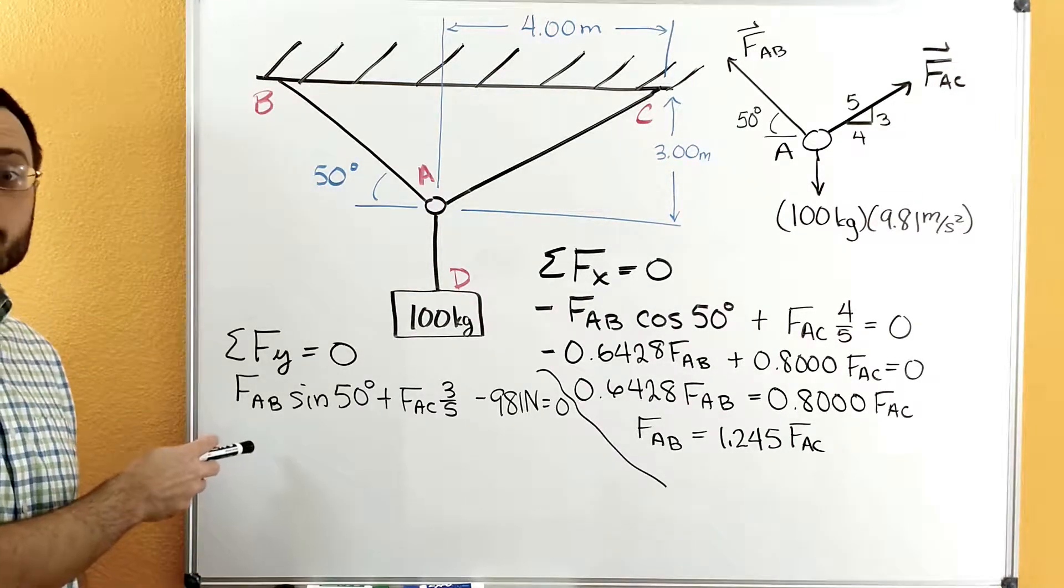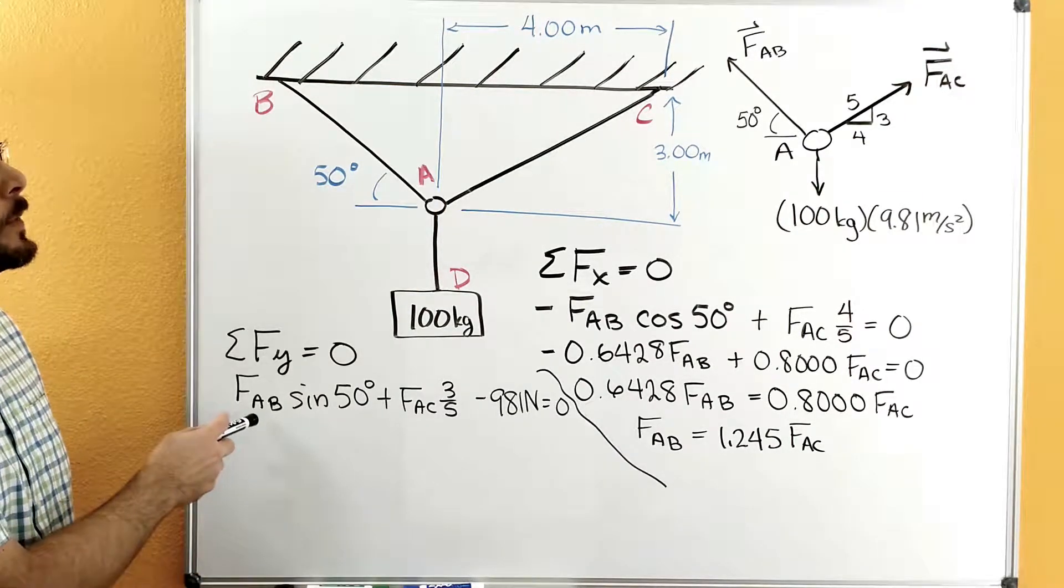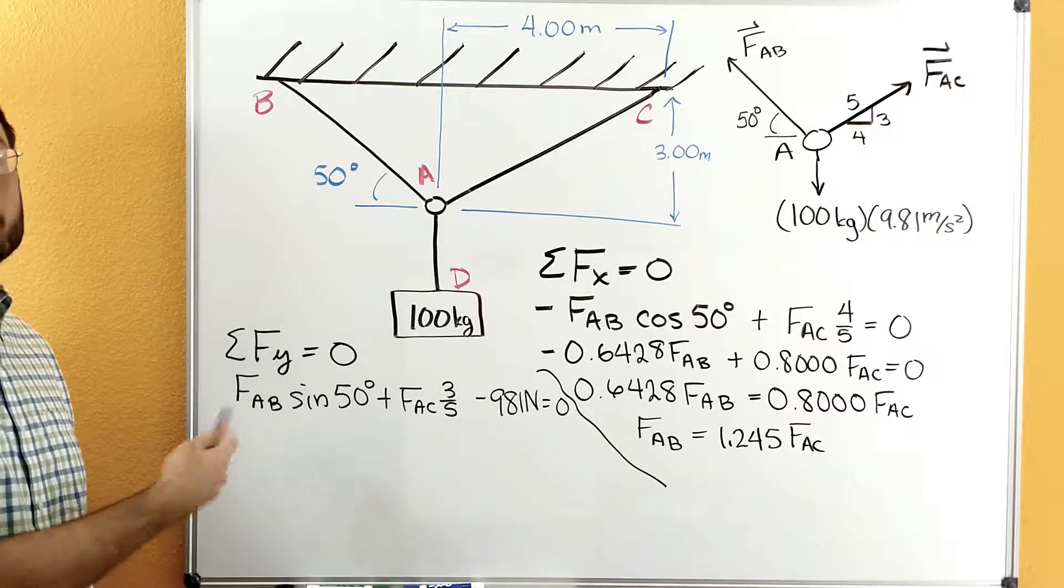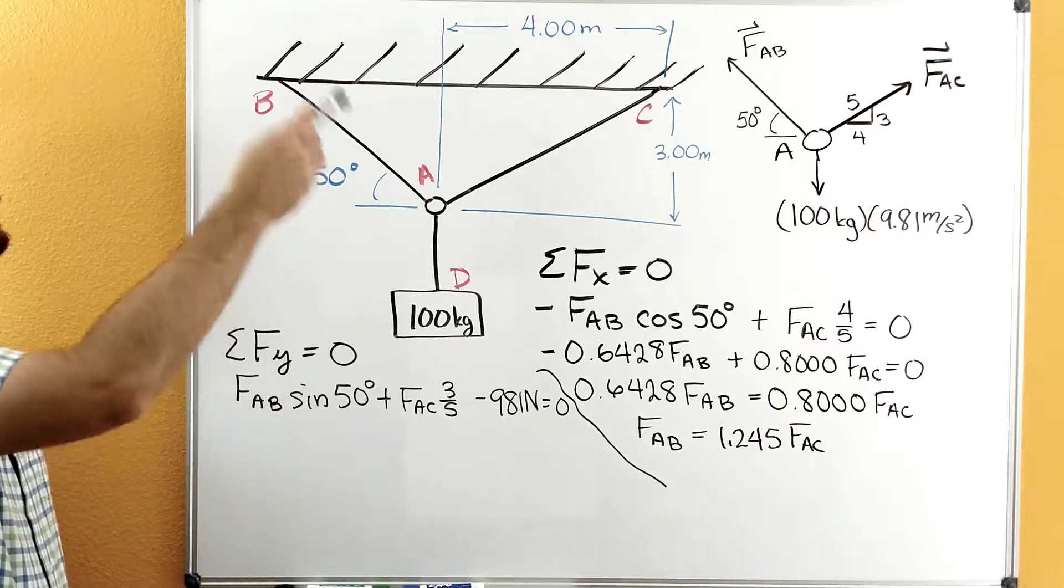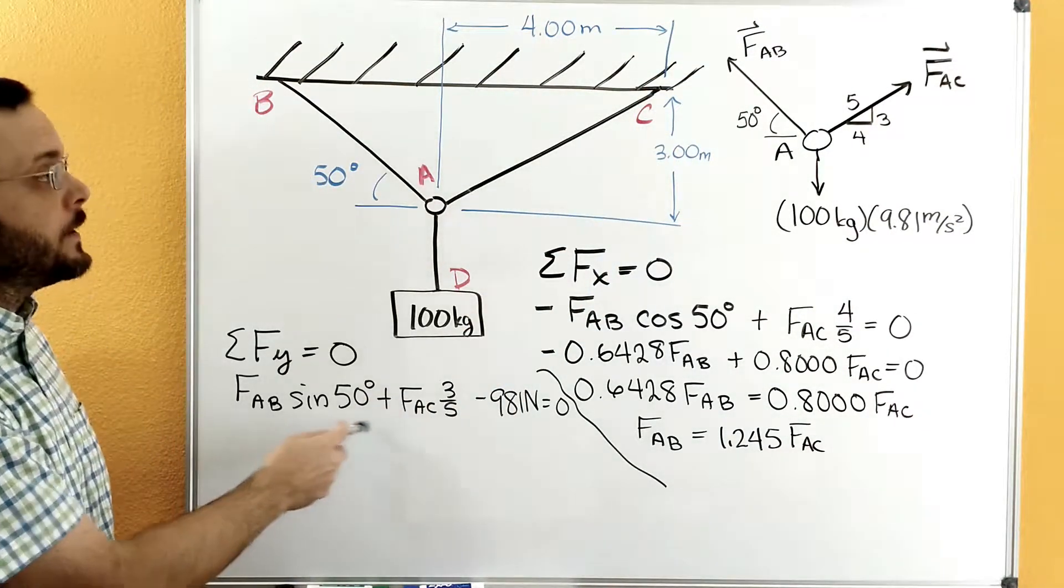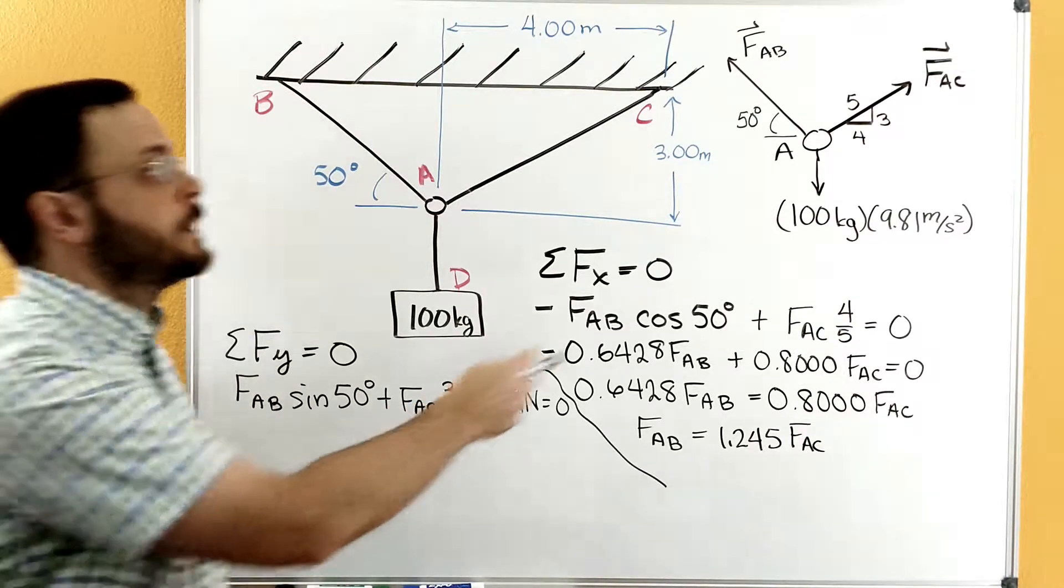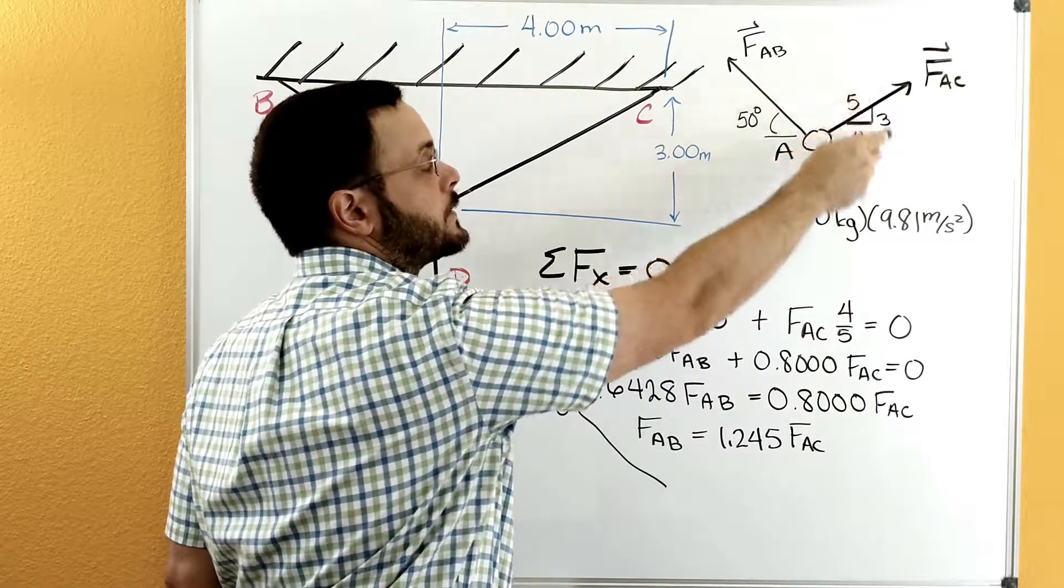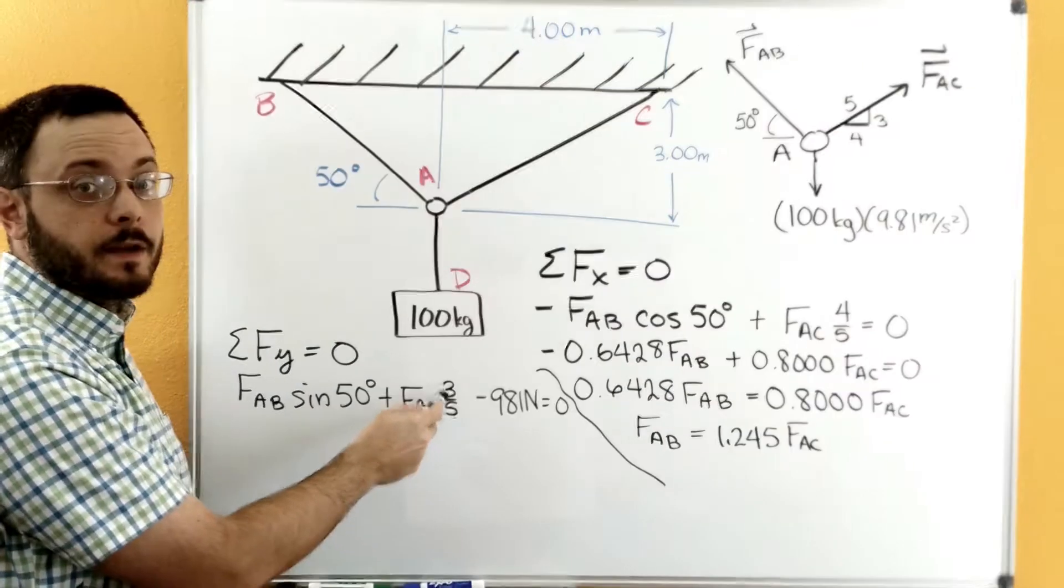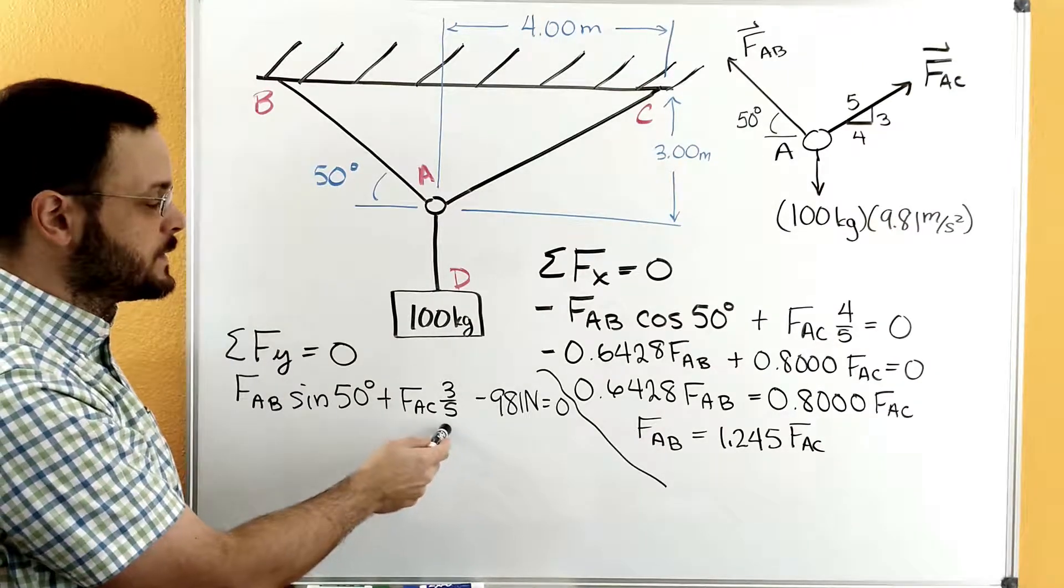Now let's do our sum of forces in the y. So here's our sum of forces in the y equation. We have the y component of FAB. And it's going to be FAB sine of 50 degrees. We're using sine because we're looking at the vertical side here, which is opposite to the angle. And then we have FAC times the vertical side because we're doing sum of forces in the y